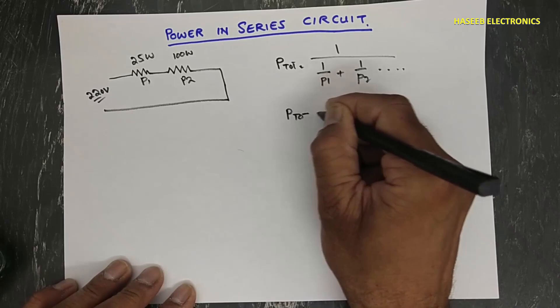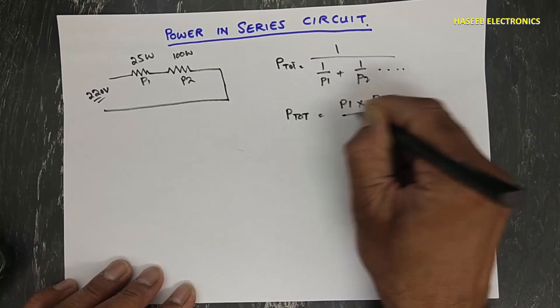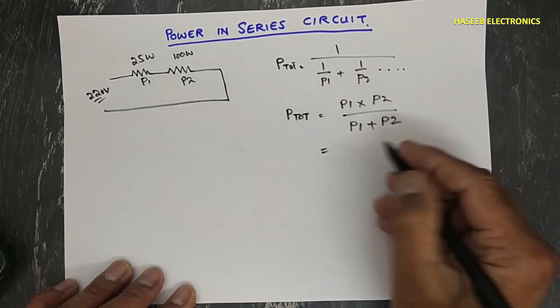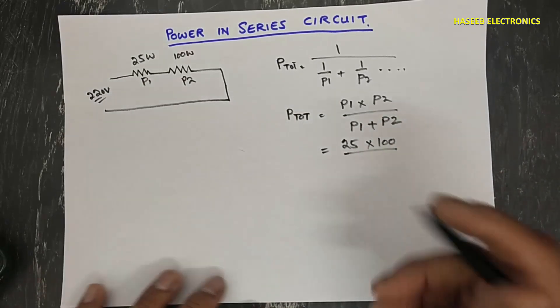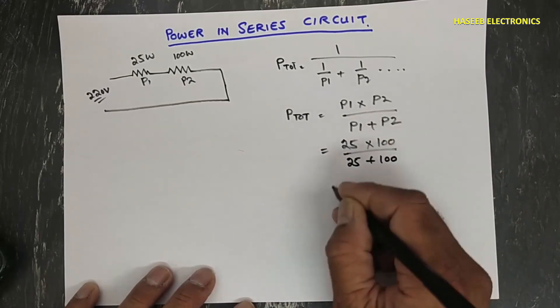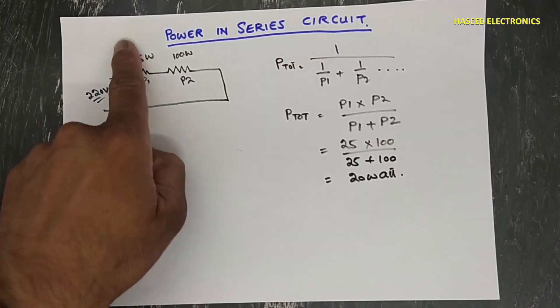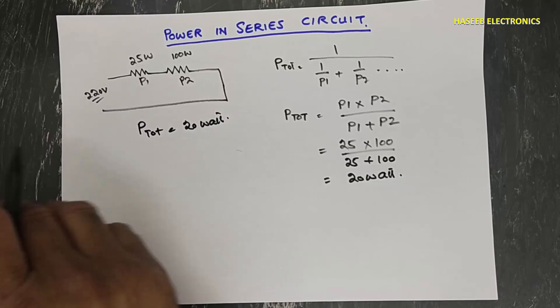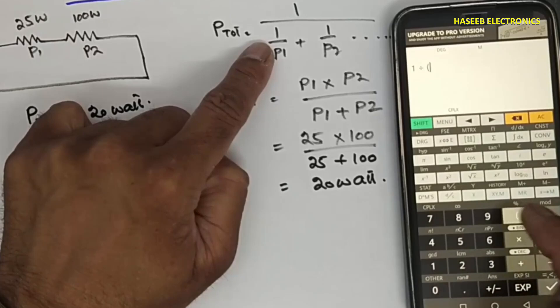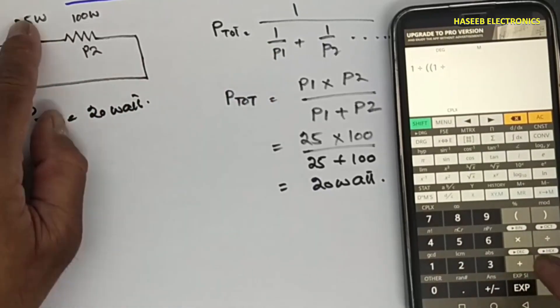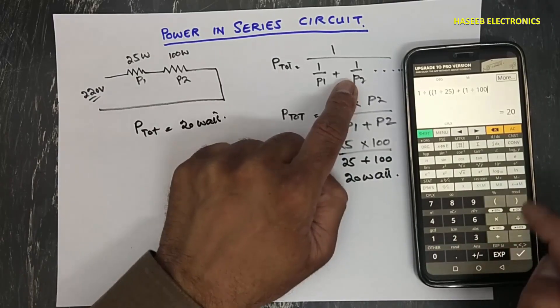Or we can use for two stages calculation: P1 multiply with P2 divided by P1 plus P2. 25 multiply by 100 divided by 25 plus 100, it is 20 watt load. The total power consumption of this circuit is 20 watt. If you will check this one: 1 divided by double bracket (1 divided by 25 bracket closed plus 1 divided by 100), total power is 20 watt. The same, this method or this method.